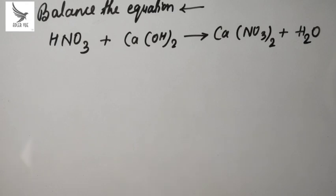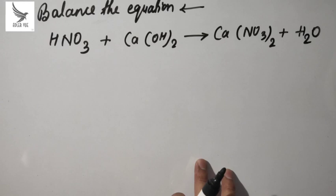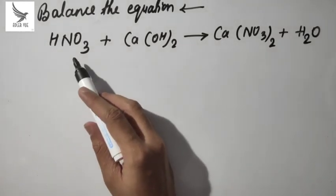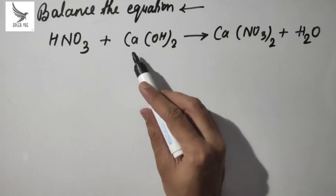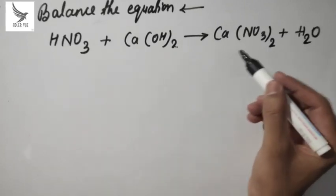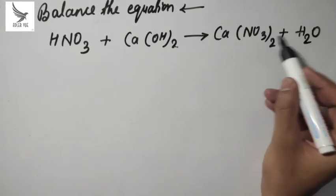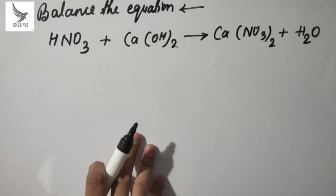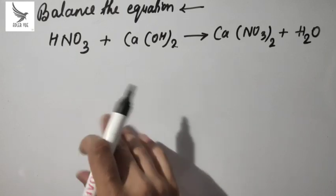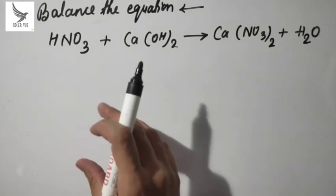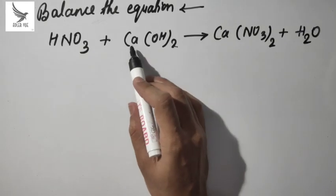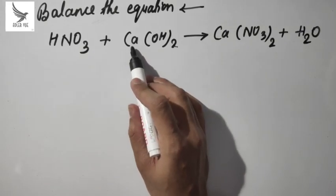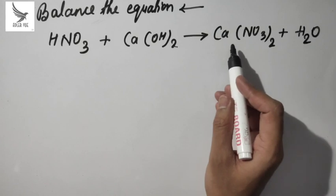The first question asked is to balance this equation. We have nitric acid, HNO3, reacting with calcium hydroxide, Ca(OH)2, and the products are calcium nitrate plus H2O. I told you to balance HNO3 and oxygen — the elements and atoms. Let's start with calcium. On the left hand side calcium is 1, right hand side calcium is 1. There is no problem, it is balanced.